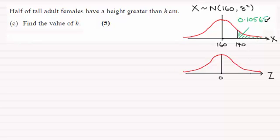So if we know that half of them are greater than this height h, where's h going to be on here? Well it's got to be half of this probability here. So let's just say that this is our value of h here, and we've got to find this. So if I was to write this down, we've got the probability of X being greater than h would be half of this probability.